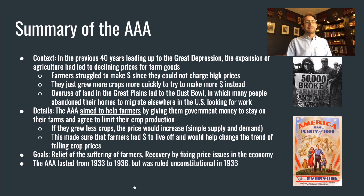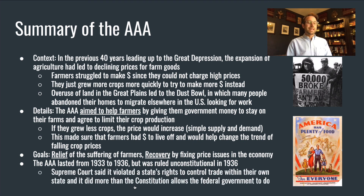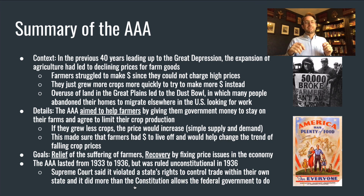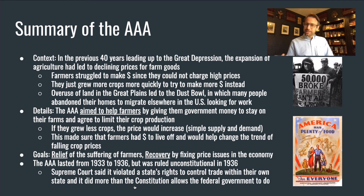The AAA only lasted for three years, and the Supreme Court ruled it unconstitutional in 1936. They said it violated a state's right to control trade within their own states and did more than the Constitution allows the federal government to do. FDR had gone in and said Congress, work with me — we're going to give all this money to farmers. Then the Supreme Court said you can't do this because it's contained within just that state, and that state gets to decide how to deal with things created within their own state. They also told FDR he was acting like a king, like a dictator — this is too much power. So the AAA lasted a few years, helped some farmers, but did not persist after that.